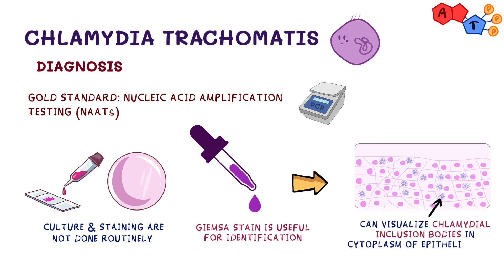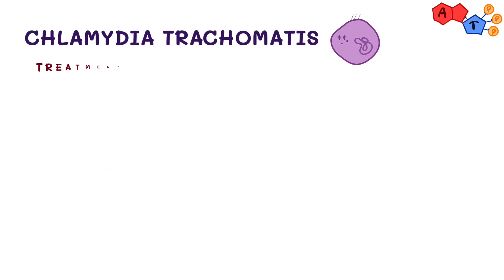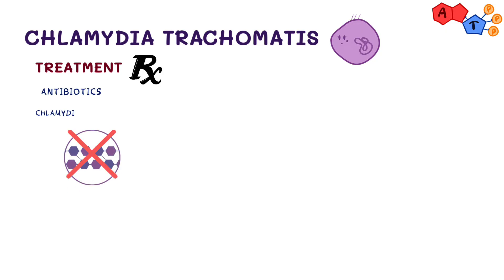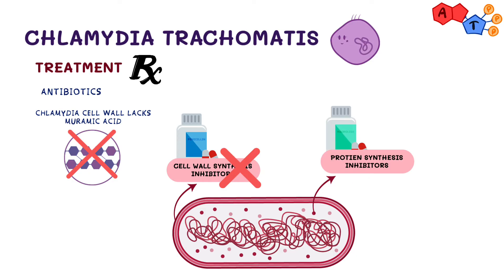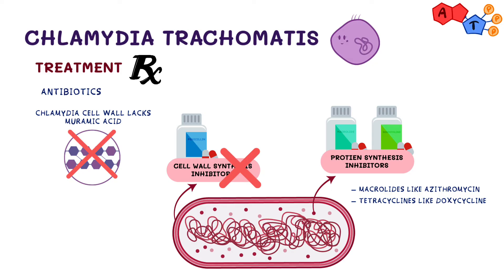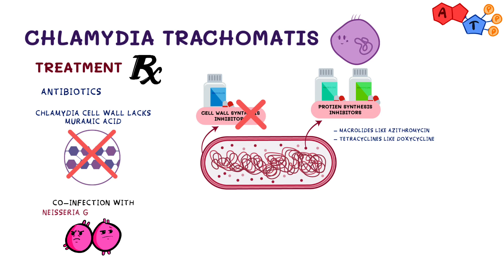For management, we treat Chlamydia trachomatis with antibiotics. Since Chlamydia lacks muramic acid in its wall, penicillins are not effective because they are cell wall inhibitors. Therefore, infections are treated with antibiotics that inhibit bacterial protein synthesis, such as macrolides like azithromycin, or tetracyclines like doxycycline. Genital infection is frequently associated with co-infection with Neisseria gonorrhoeae, so we give ceftriaxone along with the chlamydial regimen.